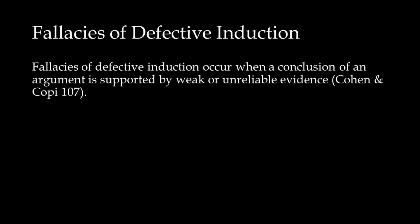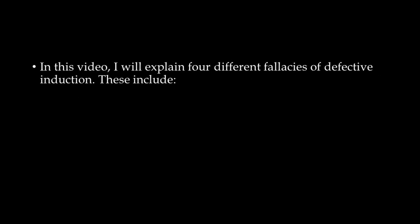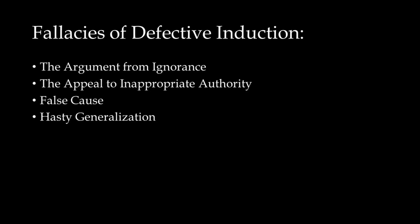Fallacies of Defective Induction occur when a conclusion of an argument is supported by weak or unreliable evidence. In this video, I will explain four different fallacies of defective induction. These include the argument from ignorance, the appeal to inappropriate authority, false cause, and hasty generalization.